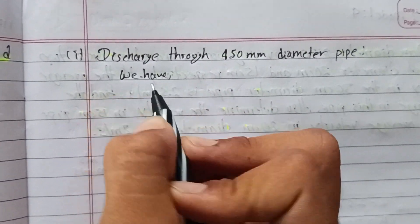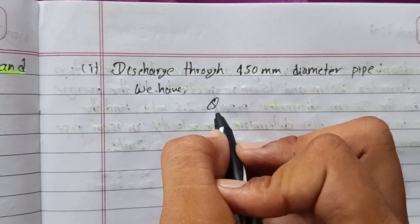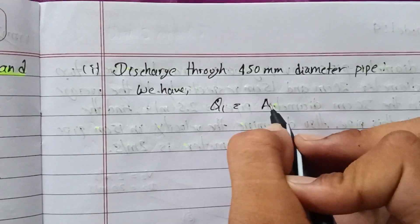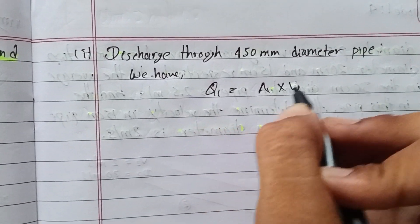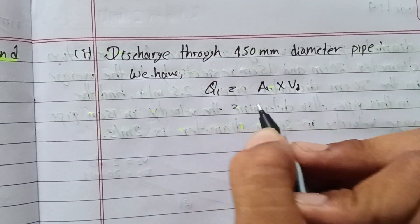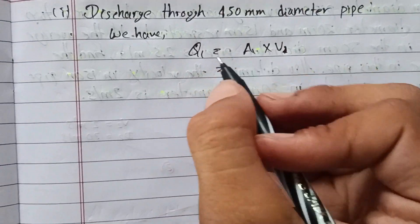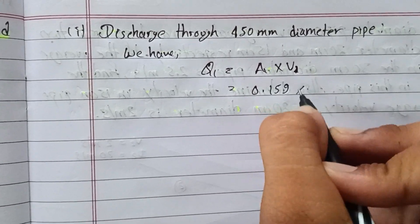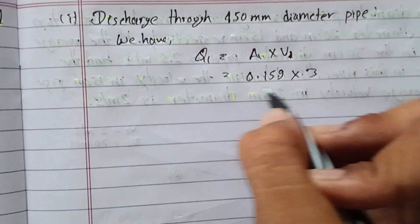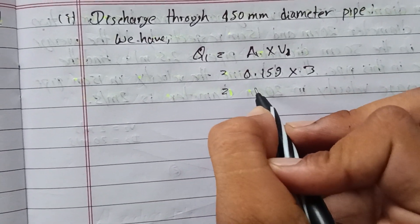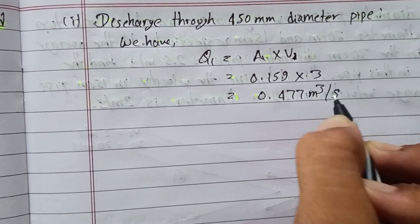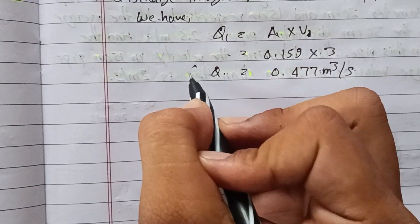Using the discharge formula, Q1 equals A1 times V1. So Q1 equals 0.159 times 3, which gives a discharge of 0.477 meters cubed per second. This is the discharge through Pipe 1.